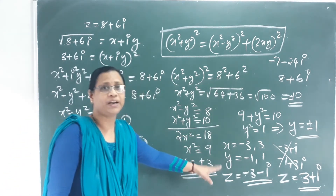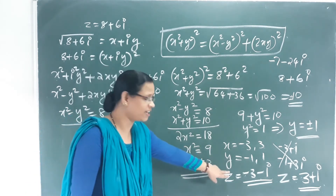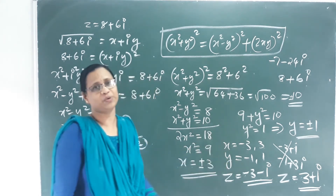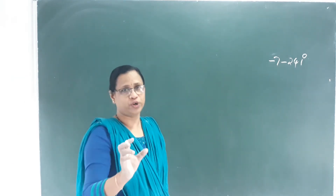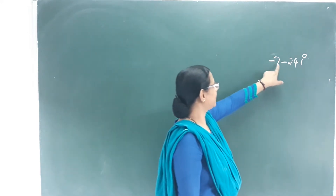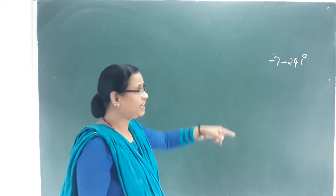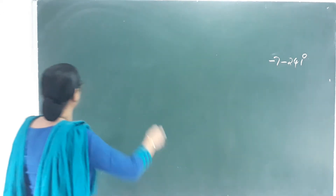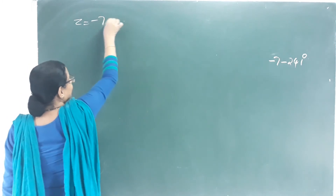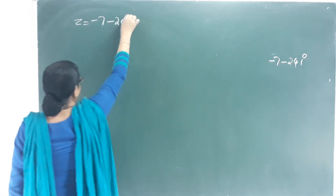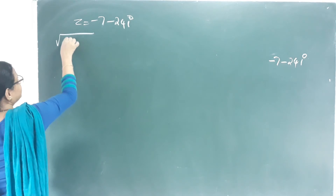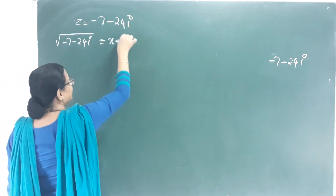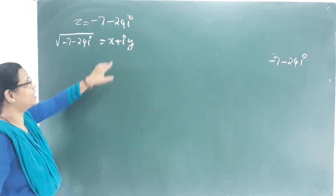Next example: find the square root of −7 − 24i. Let √(−7 − 24i) = x + iy. We will find x and y.